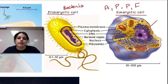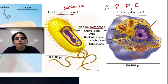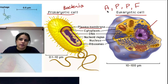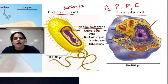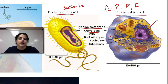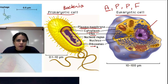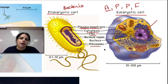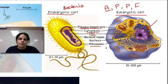Either way, prokaryotic or eukaryotic cells, all cells have certain things in common. The first thing they have in common is a plasma membrane or cell membrane on the outside — or if you're not an animal cell, it's on the inside of the cell wall. All cells have cytoplasm, which is the fluid-like interior of the cell. All cells have genetic material such as DNA and RNA. All cells have ribosomes, which help make proteins — that's their main function. And all cells also have a sort of skeleton called the cytoskeleton that gives shape, form, and some protection to the different cells.